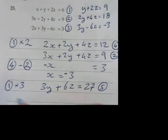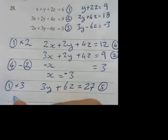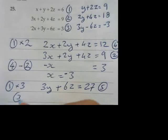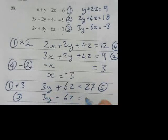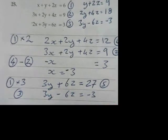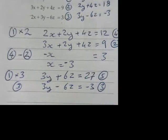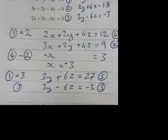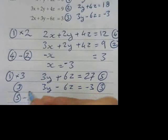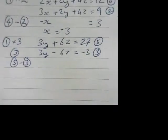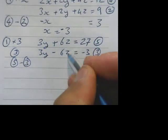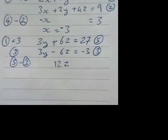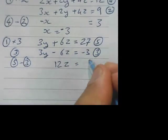And I'm going to write down the fact that we've got number 3 in here. 3y minus 6z equals negative 3. That's equation number 3. So I'm going to do 5 take away 3. Which is going to give me something along the lines of nothing here. 6z minus minus 6z is 12z. Be careful.